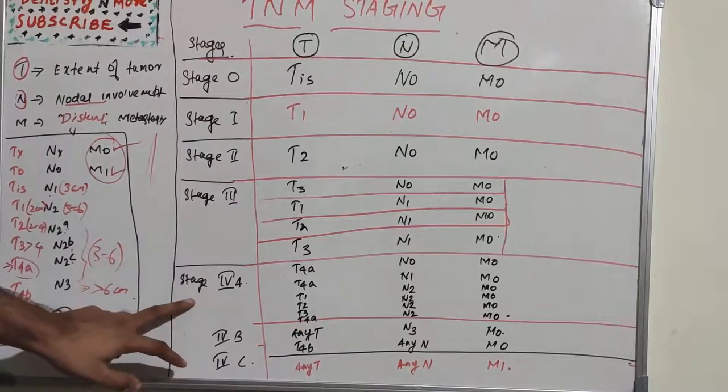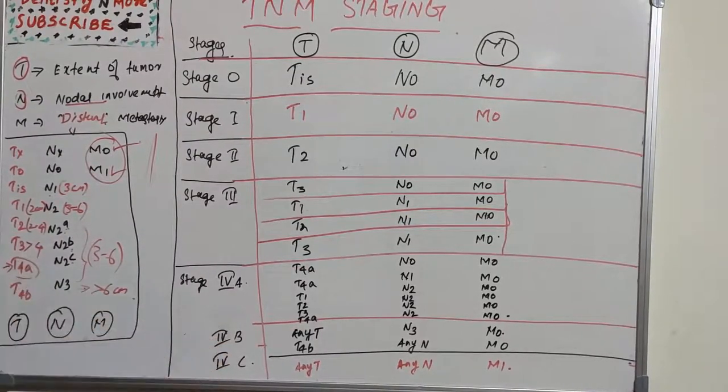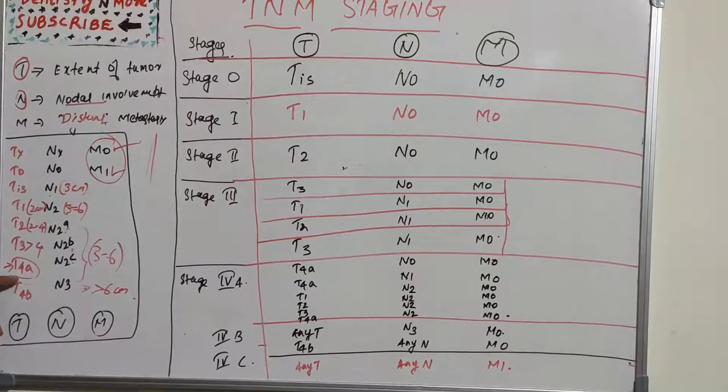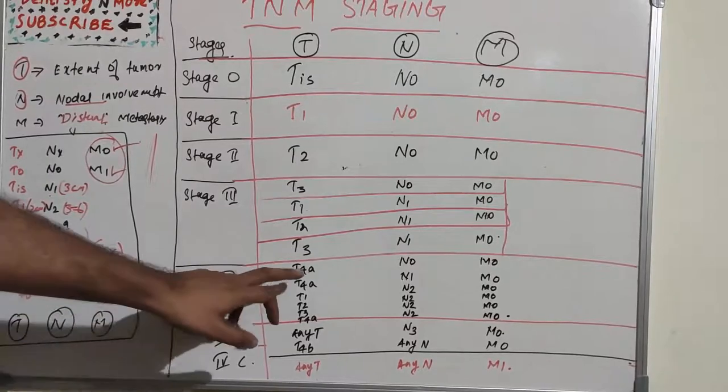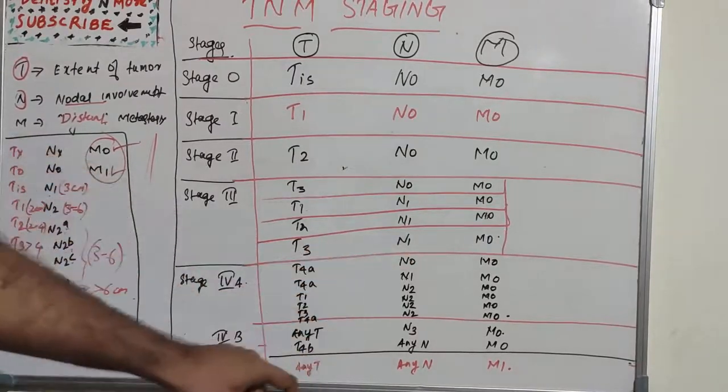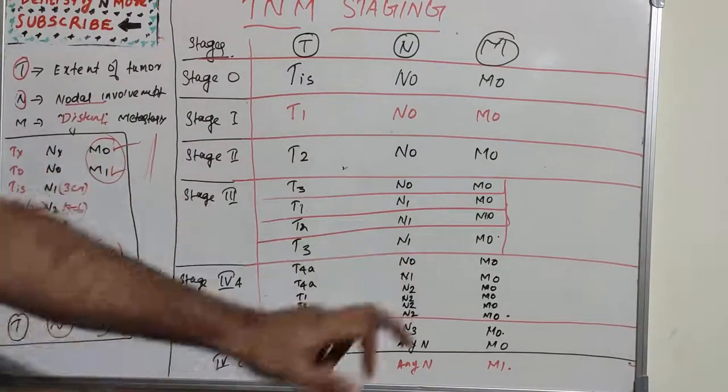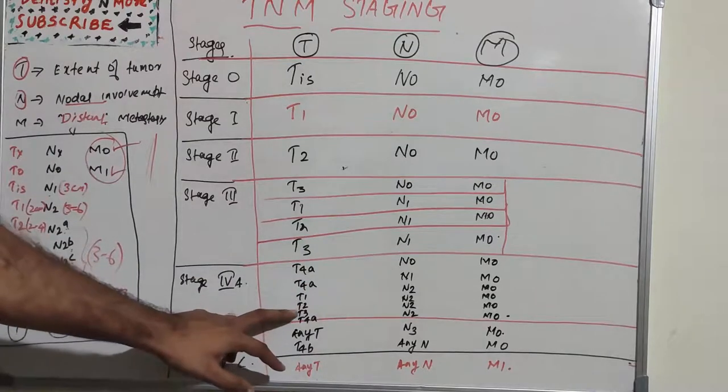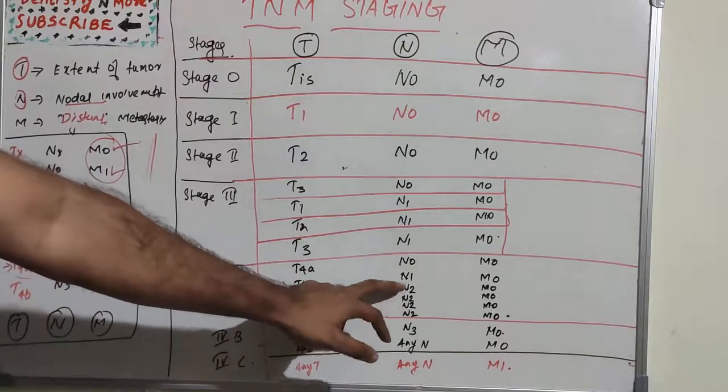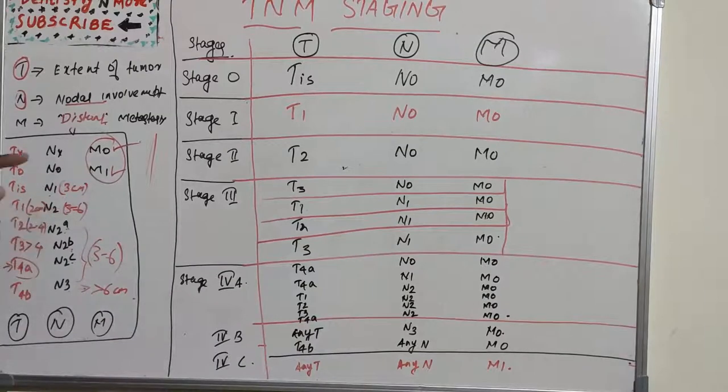Stage 4 has three categories: A, B, and C. Stage 4A is T4A with N0 M0, T4A with N1 M0, then T1, T2, T3 with presence of N2 (3 to 6 centimeter nodal extension) with M0, and T4A with N2 also becomes stage 4A.